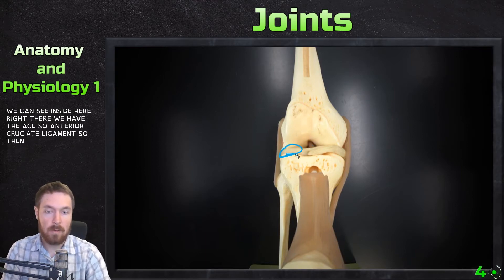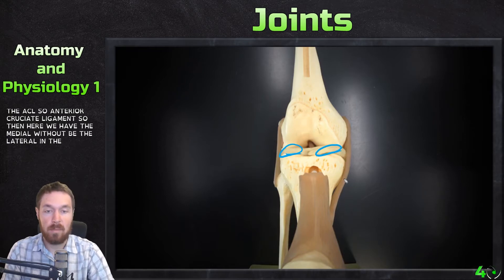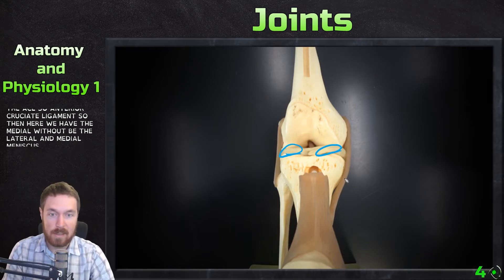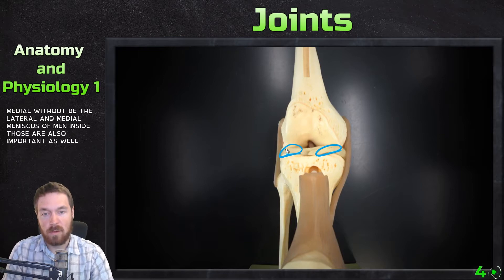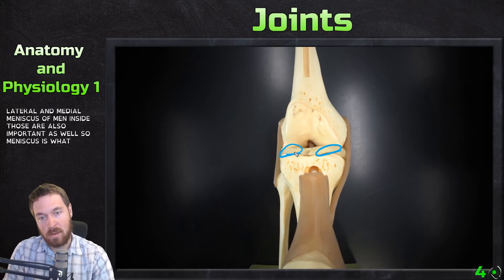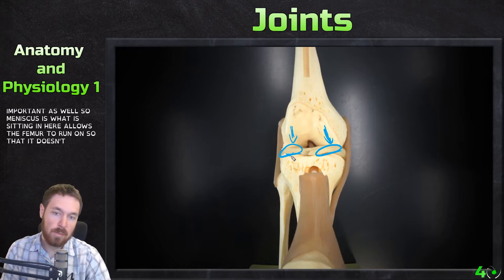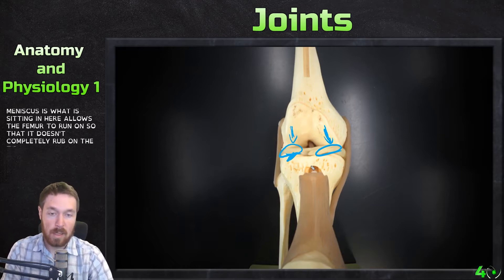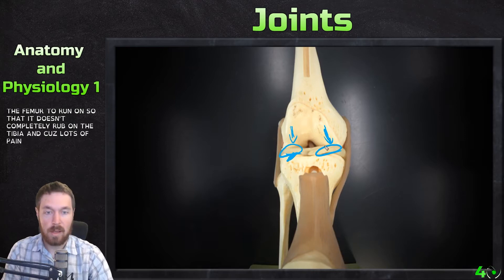We also have the lateral and medial meniscus — or menisci. The meniscus sits inside the knee joint and allows the femur to glide so that it doesn't completely rub on the tibia and cause pain. That's the important role of the meniscus.